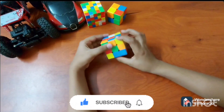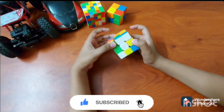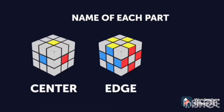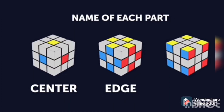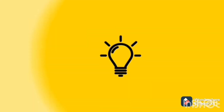For solving a 3x3 Rubik's Cube, you have to know the parts of the Rubik's Cube. There is a center, there is an edge, and there is a corner. There is one center, four edges and four corners.